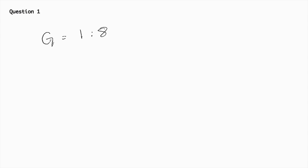Next, we have to find Philip's ratio. He used 10 ounces of drink mix for 64 ounces of water, making the ratio of drink mix to water 10 to 64. Now we need to write these down as fractions: George is 1 over 8 and Philip is 10 over 64.